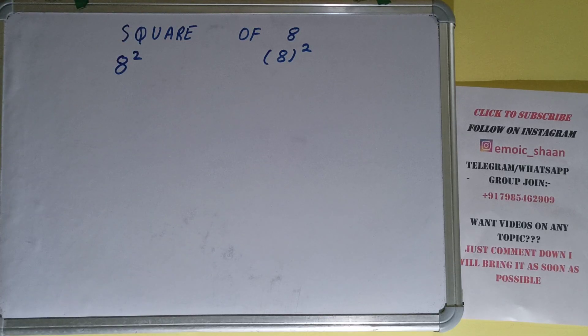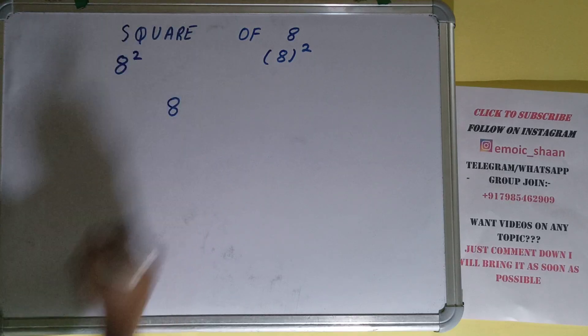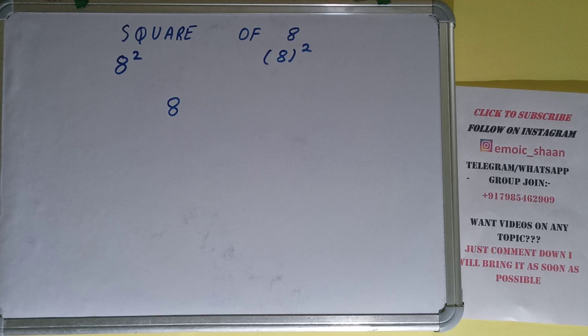Now let's come on to the question. We need to find the square of 8. As I told you earlier, square means multiplying the number by itself. So here the number is 8, so we need to multiply 8 by 8 to find the square.